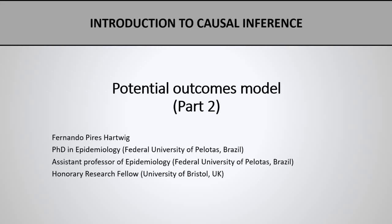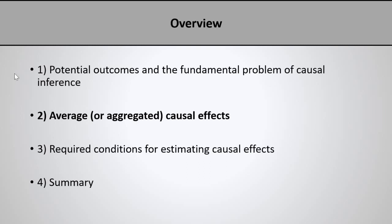Hello everyone and welcome back to our introduction to causal inference course. Today's video is about the second part of our lecture on the potential outcomes model. In the first part we discussed what potential outcomes are and used them to define the fundamental problem of causal inference. Today we want to again use potential outcomes to define what we call average or aggregated causal effects.